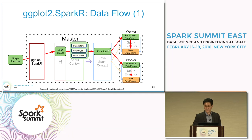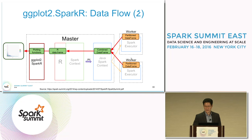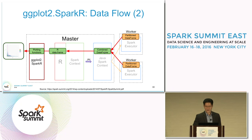The Spark functions read data from the workers, and the results are stored in new data frames. The resulting data frames are combined into one Spark data frame within the master node, converted to an R data frame, and used for plotting the graph using the ggplot2 function.